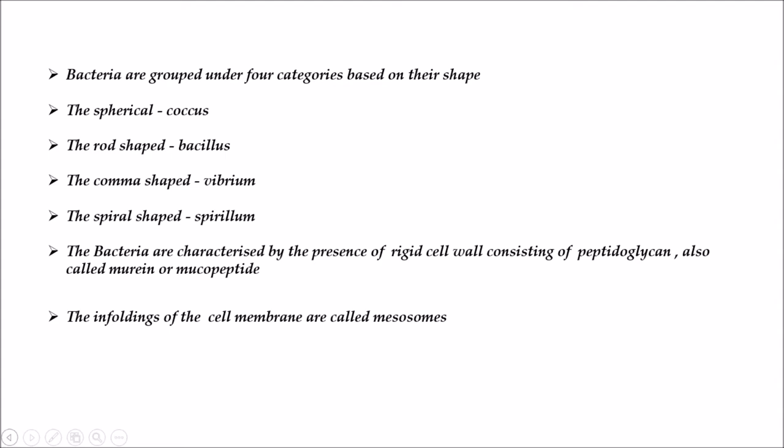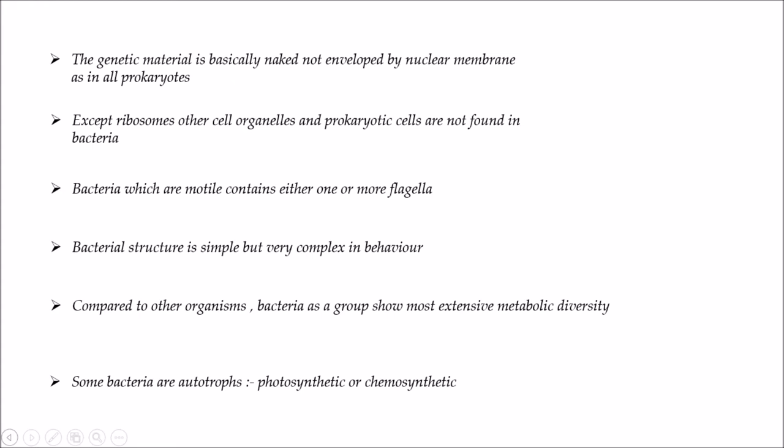Bacteria are characterized by the presence of a rigid cell wall containing peptidoglycan, also called murein or mucopeptide, whereas archaebacteria have pseudomurein. The infoldings of the cell membrane in bacteria are called mesosomes. The genetic material is naked, not enveloped by a nuclear membrane, as in all prokaryotes. Cell organelles other than ribosomes are not found in bacteria.